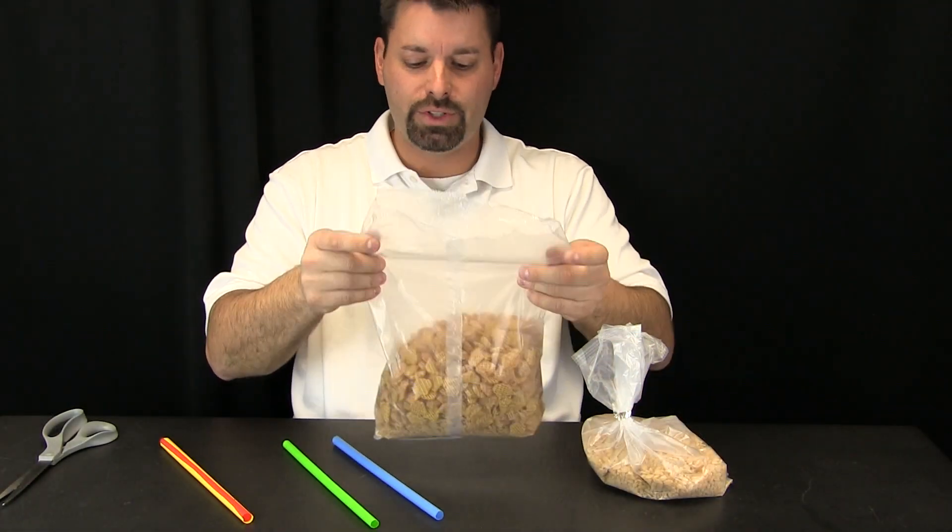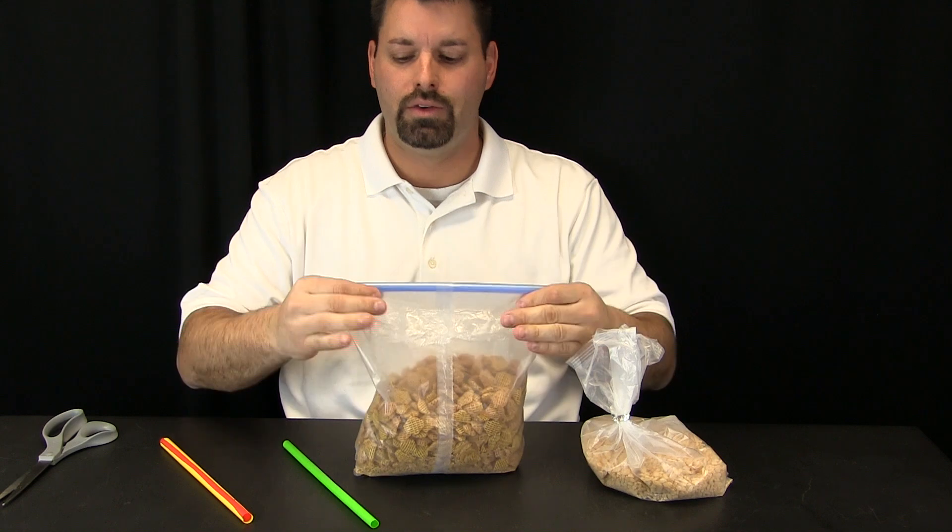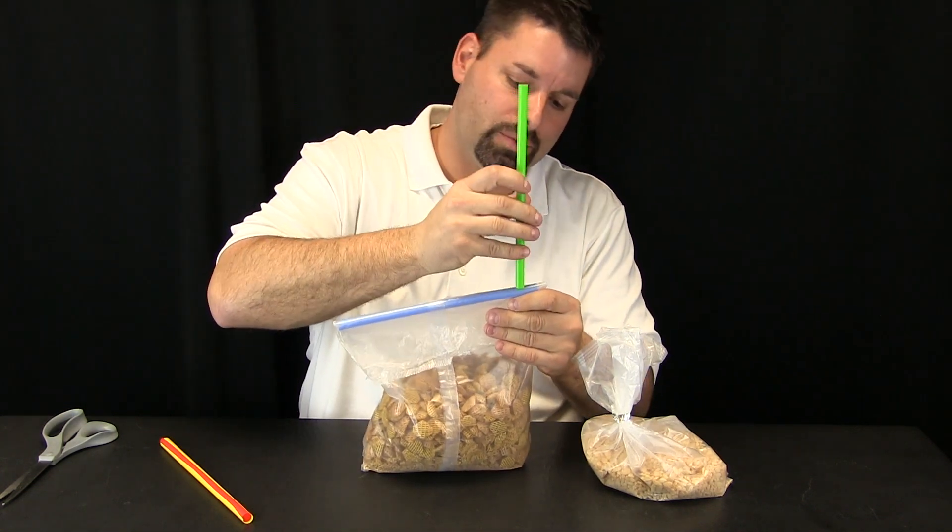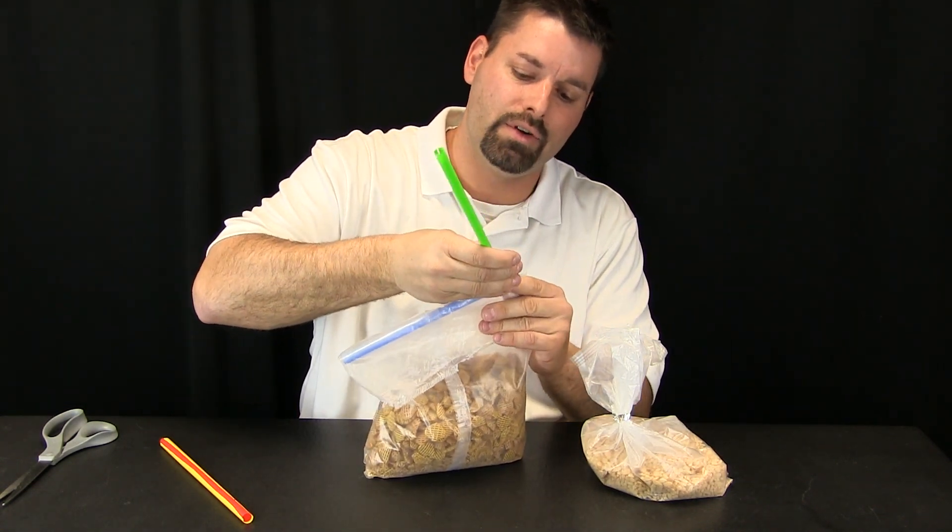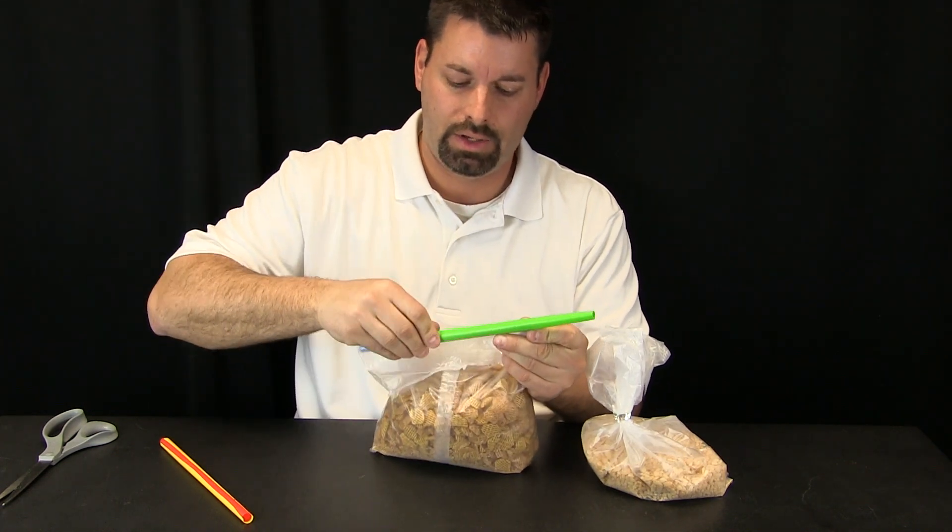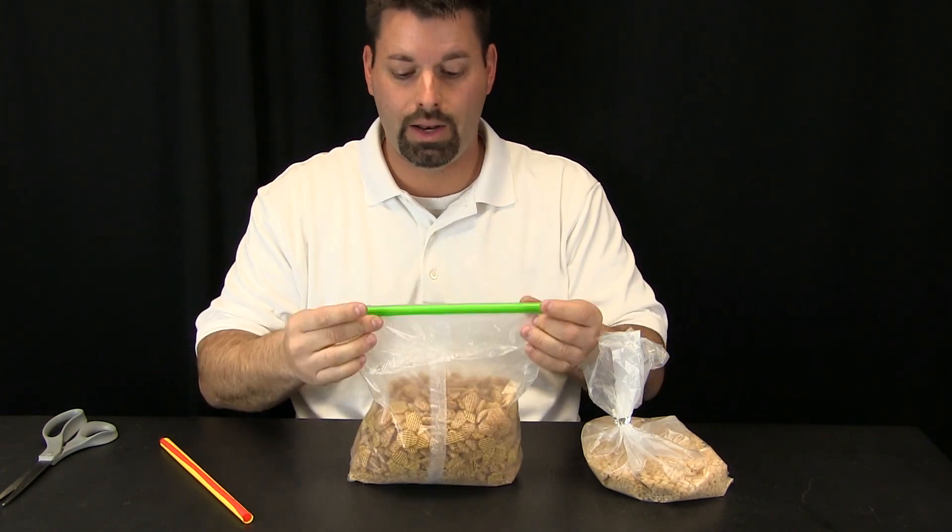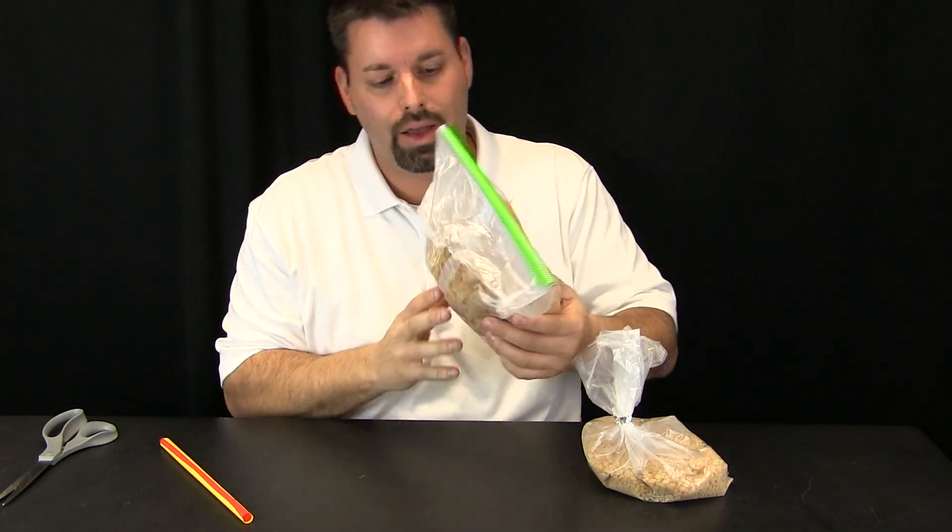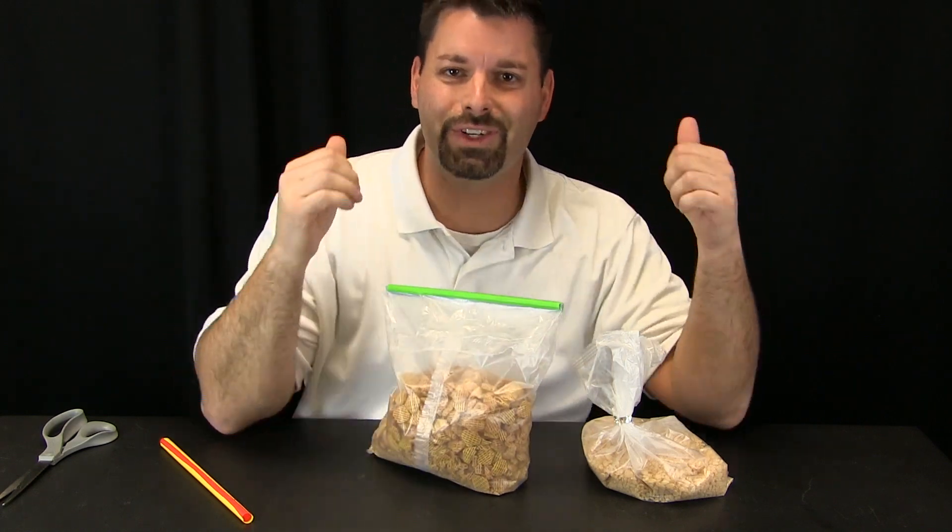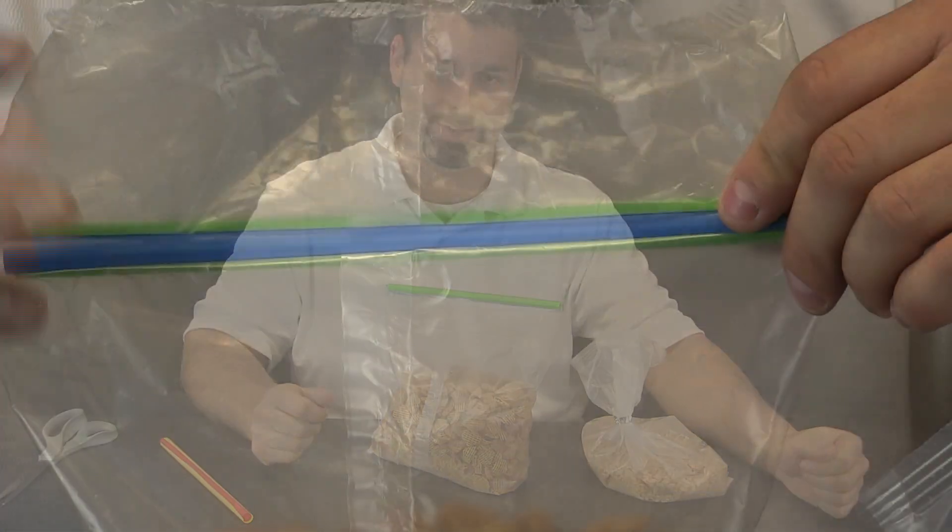So let us take our bag of open cereal, take our center blue line, fold it over, and now take our green groove and see if we can fit it over top. Snap it into place, slide it, and I think we were successful. I think we have made our own version of a Ziploc baggie.